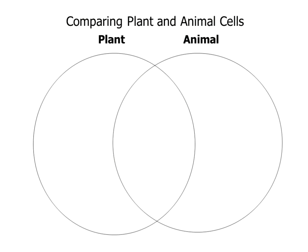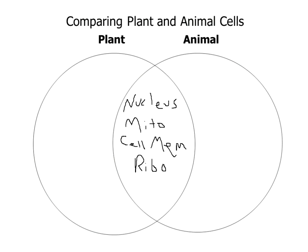Let's compare plant and animal cells. They have lots of things in common. They both have a nucleus, mitochondria, a cell membrane, ribosomes, lysosomes, and ER — both smooth and rough endoplasmic reticulum.